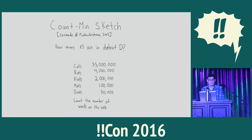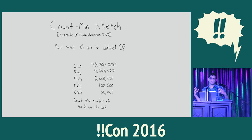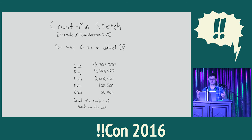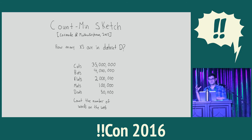Let's jump into the next sketch called the count-min sketch. This sketch helps us approximate how many of a particular item appear in our data set. To motivate this, imagine we've crawled the web and want to know approximately how many times each word appears. Everyone knows the most popular word on the web is going to be 'cats,' but there are other words — cats, bats, flats, mats, drats — and we want to know approximately how many times each one appears. The problem is there are a lot of unique terms on the web, so we have to approximate this.